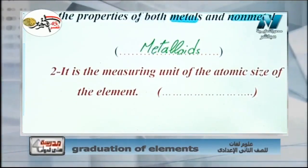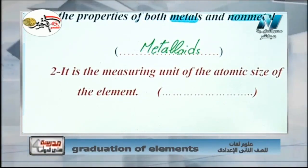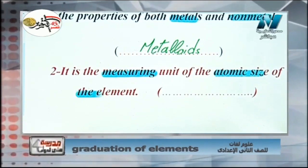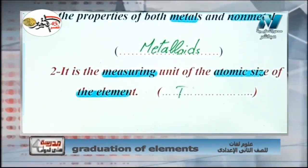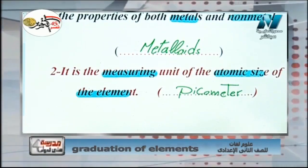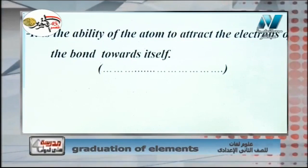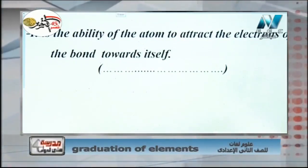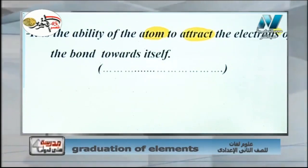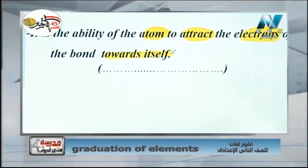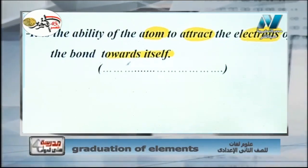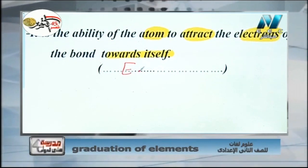Number two — the measuring unit of the atomic size of an element is the picometer. Number three — the ability of an atom to attract the electrons of a bond toward itself is called electronegativity.